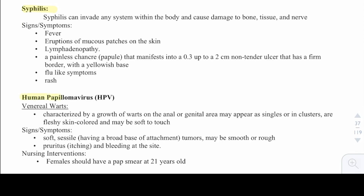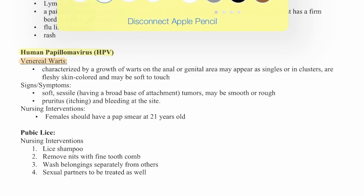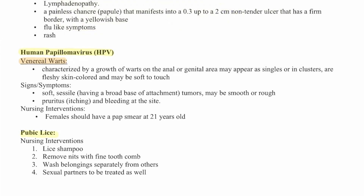Human papillomavirus (HPV) presents with venereal warts — growths on the anal or genital area that may appear as single or in clusters, are fleshy, skin-colored, and may be soft to touch. Signs and symptoms include soft, sessile tumors with a broad base of attachment, may be smooth or rough, with pruritus, itching, and bleeding at the site. Females should be educated to have a Pap smear at 21 years old. For pubic lice, interventions include lice shampoo, removing nits with a fine-tipped comb, washing belongings separately, and treating sexual partners as well.